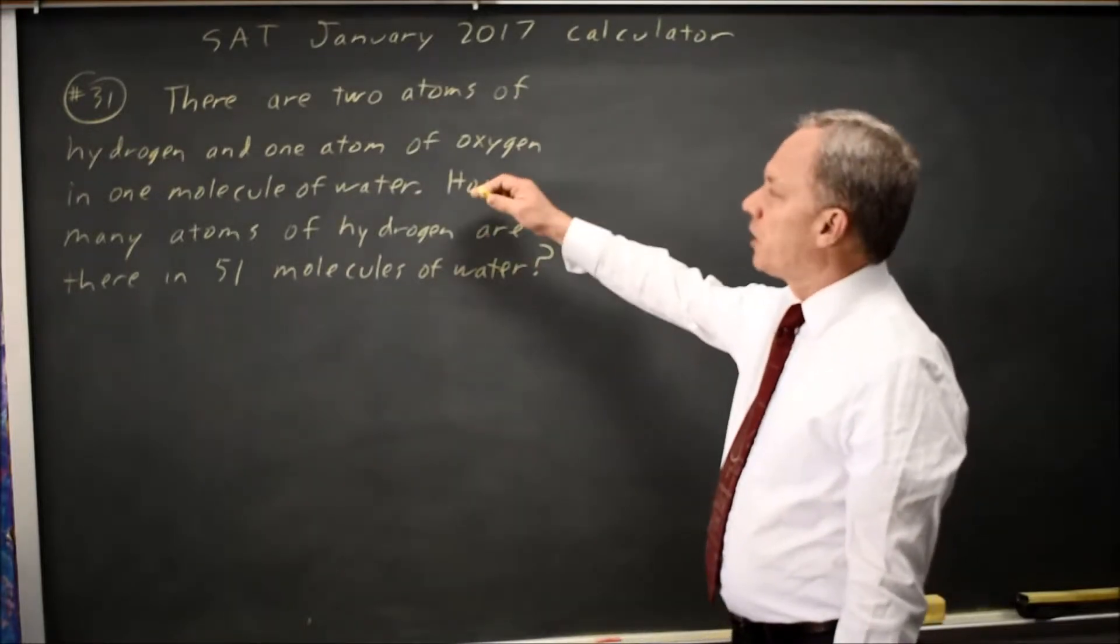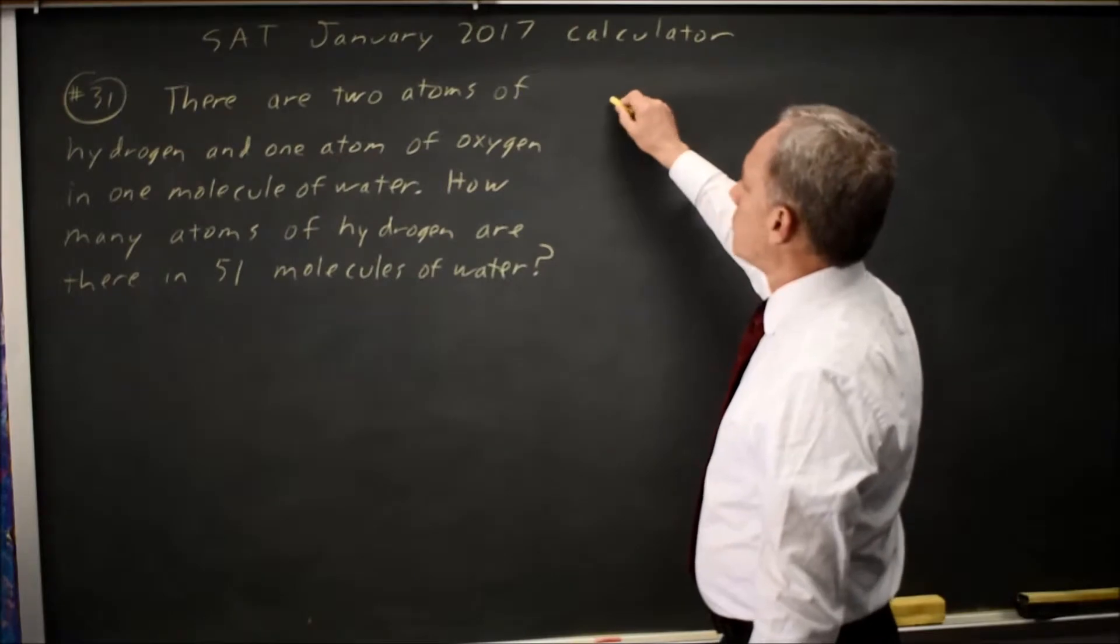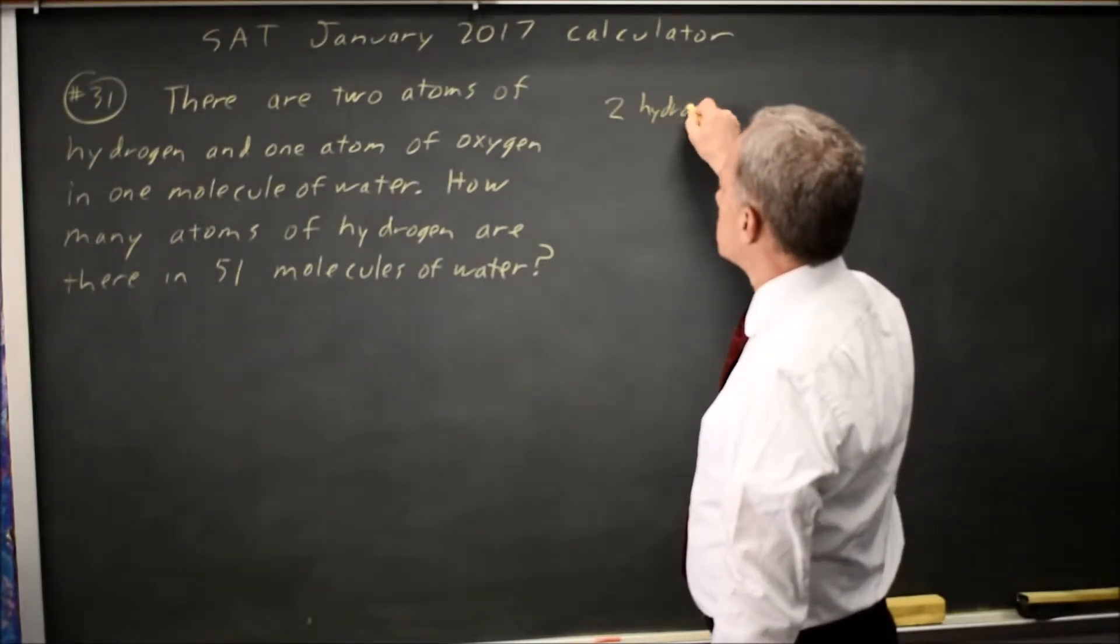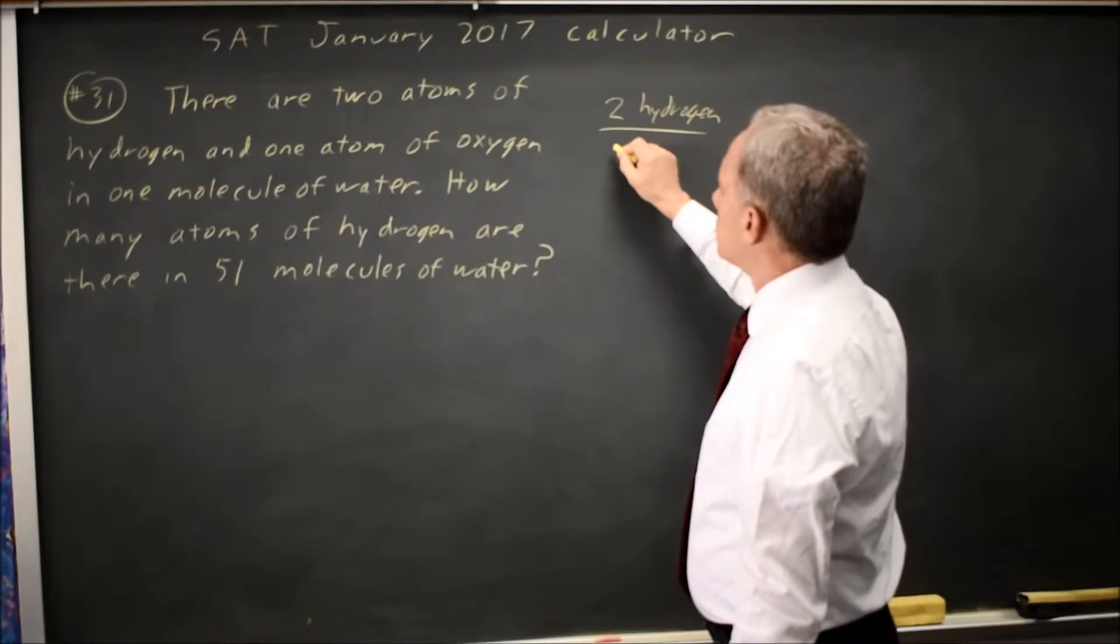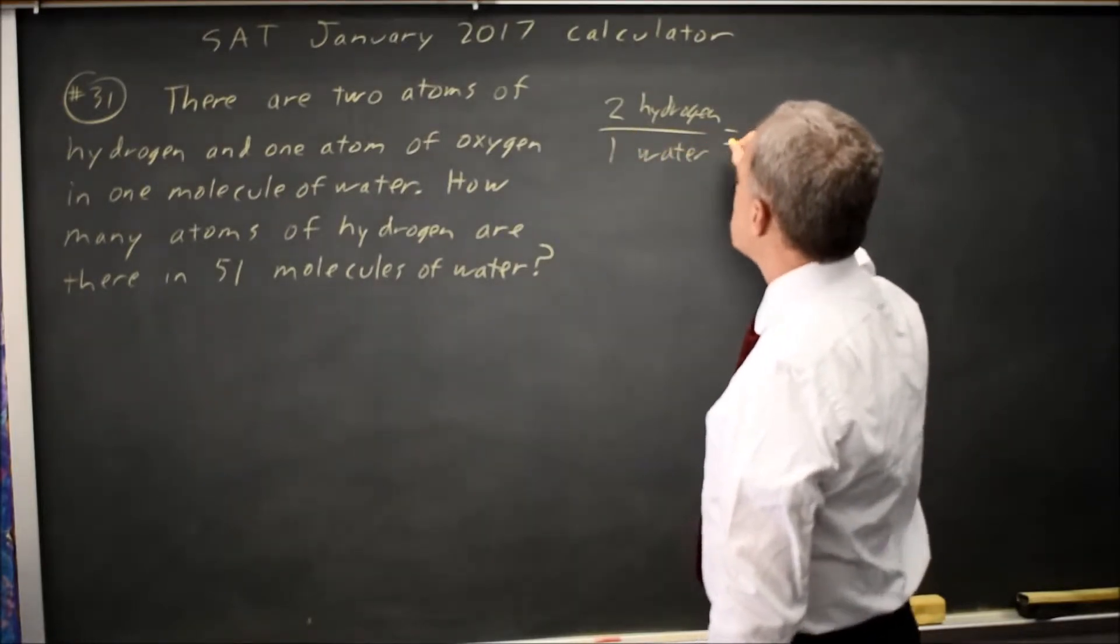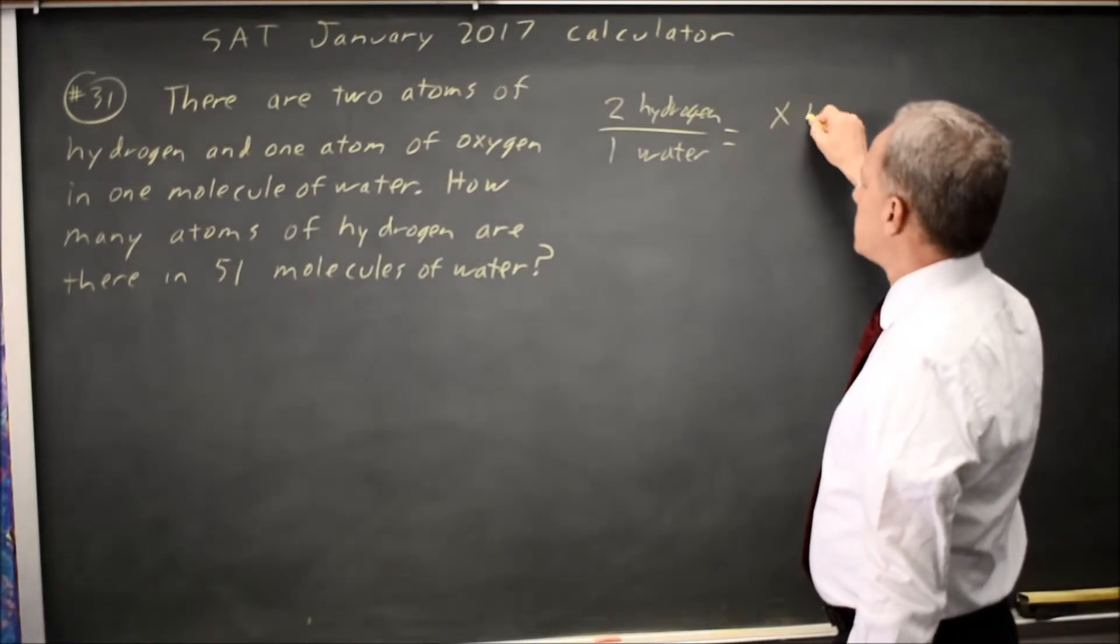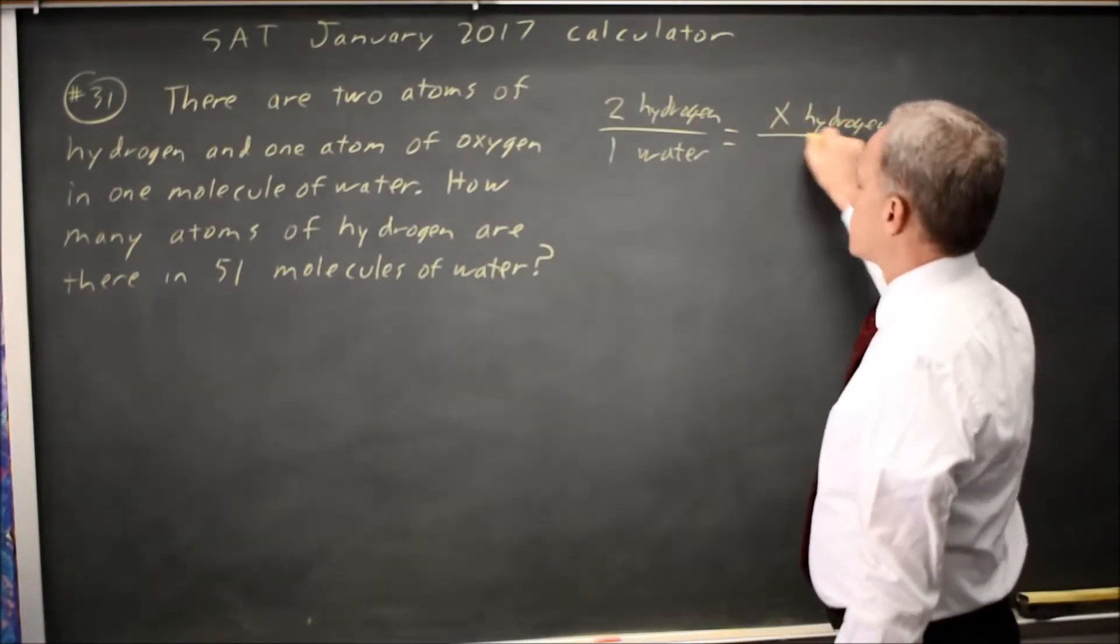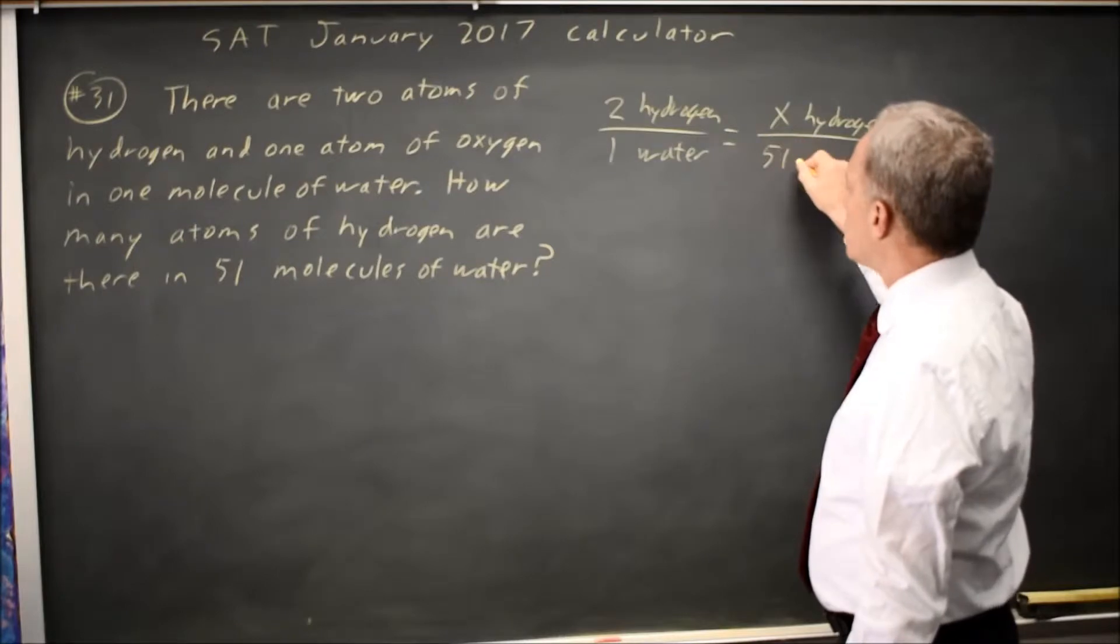So we have a proportion here. We have 2 hydrogen for 1 water, and we set that equal to x hydrogen, where x is what they're asking for, over 51 water.